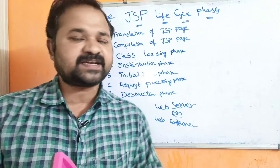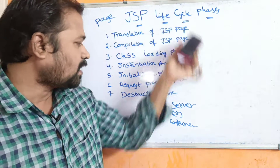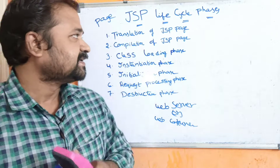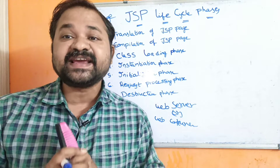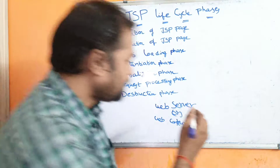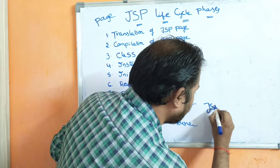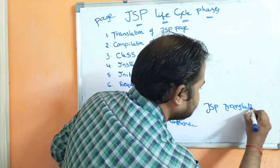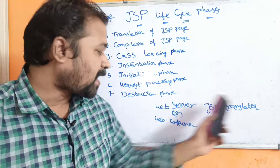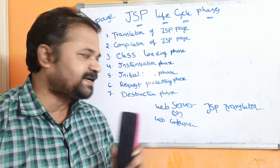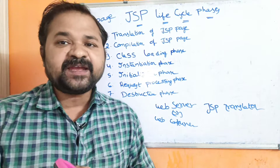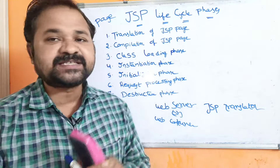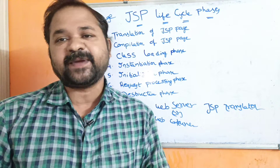Several other web servers are also available. Now let us see all these phases one by one. The first phase is Translation of JSP Pages. Here, we have a program called JSP Translator. JSP Translator is part of the web server or web container. JSP Translator translates JSP pages into Servlet pages.